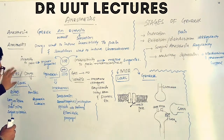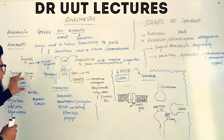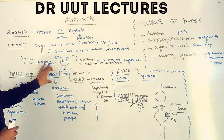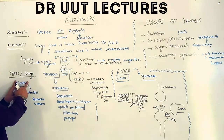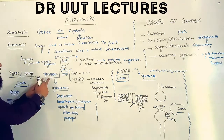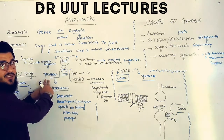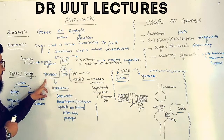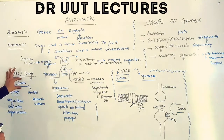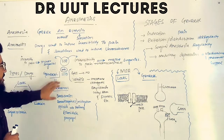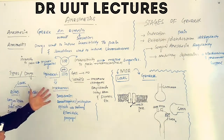Now let's look at the types and drugs of anesthetics. We have two types: local anesthetics and general anesthetics. Local anesthetics are used for minor surgeries, and general anesthetics are used for major surgeries. The drugs used in local anesthetics are esters and amides; in general anesthetics we have inhalational and intravenous agents.